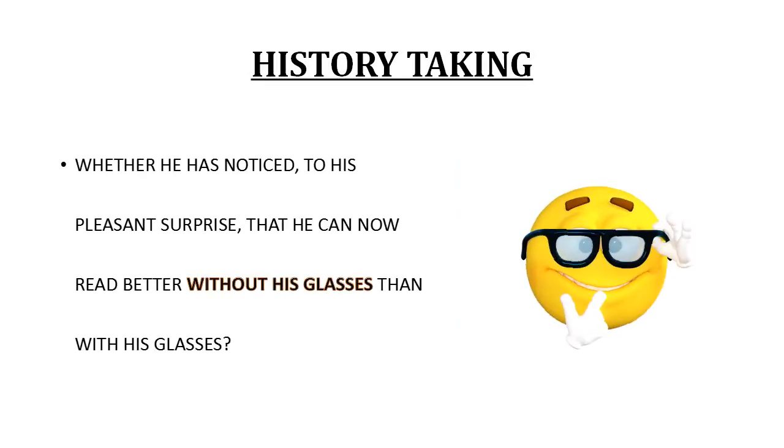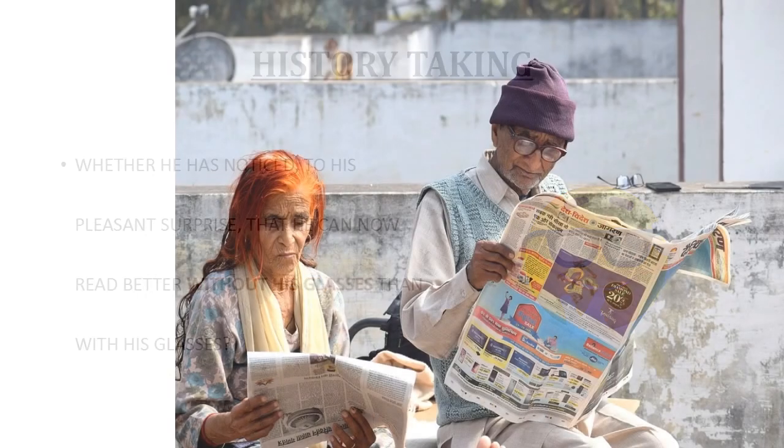So how do you take history of a patient to check for second sight? You will ask the patient whether he has noticed to his pleasant surprise that he can now read better without his glasses as compared to reading with his glasses. If he says yes, it is indicative of index myopia and nucleus sclerosis.